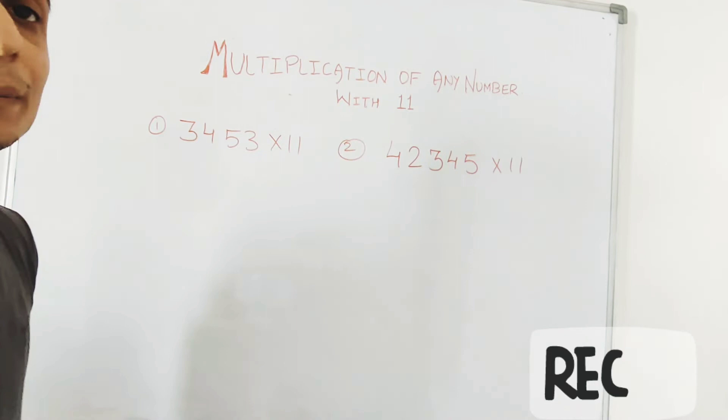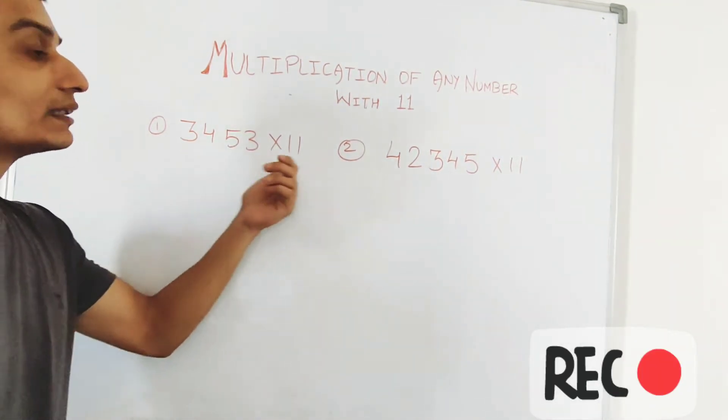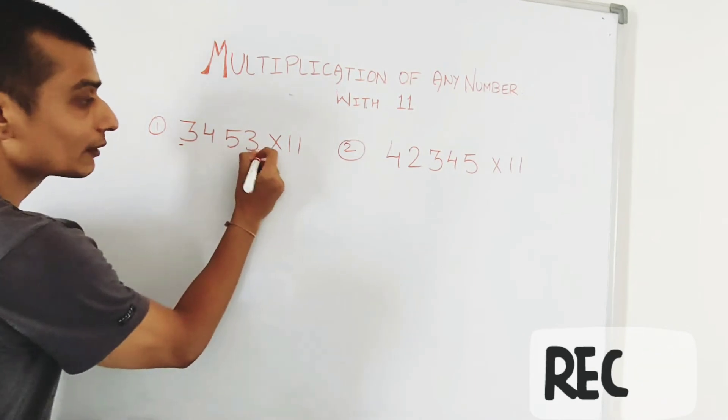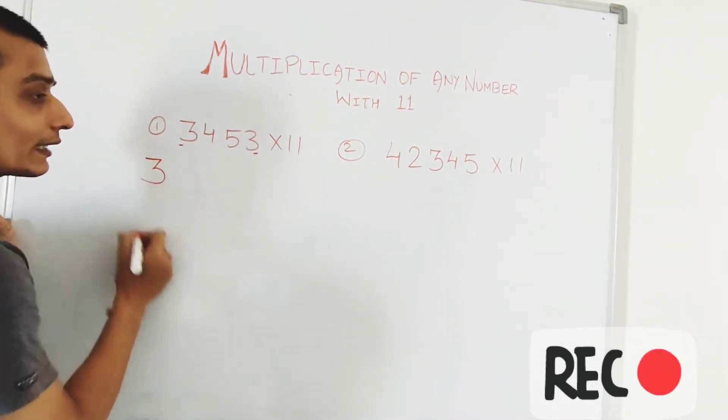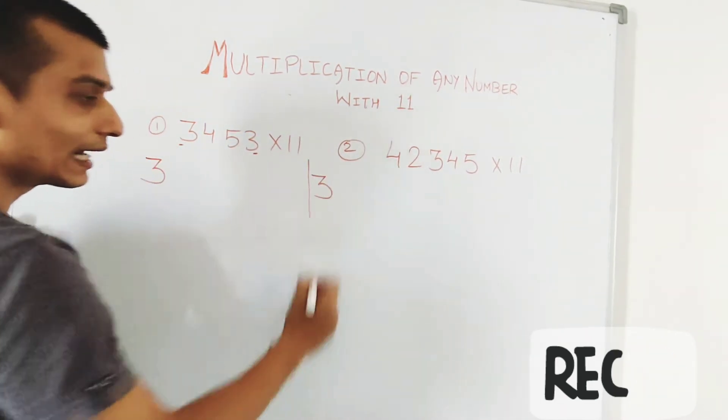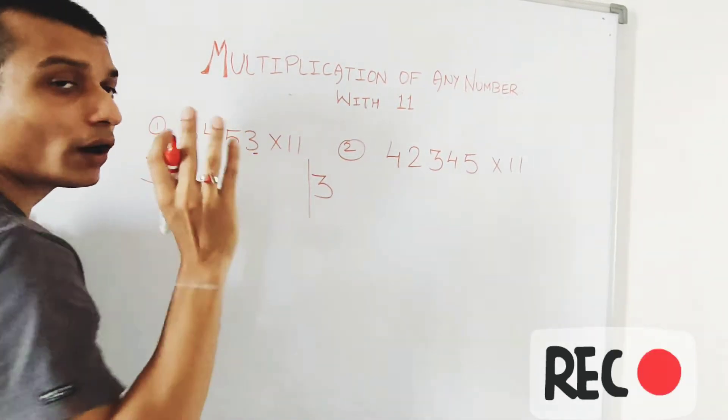First of all, here we have an example of 3, 4, 5, 3, into 11. The first number and the last number is 3. I will write it on the side of the number. One is the 3 and the final number. Now, after that, I will write some things here that will show you the answer.